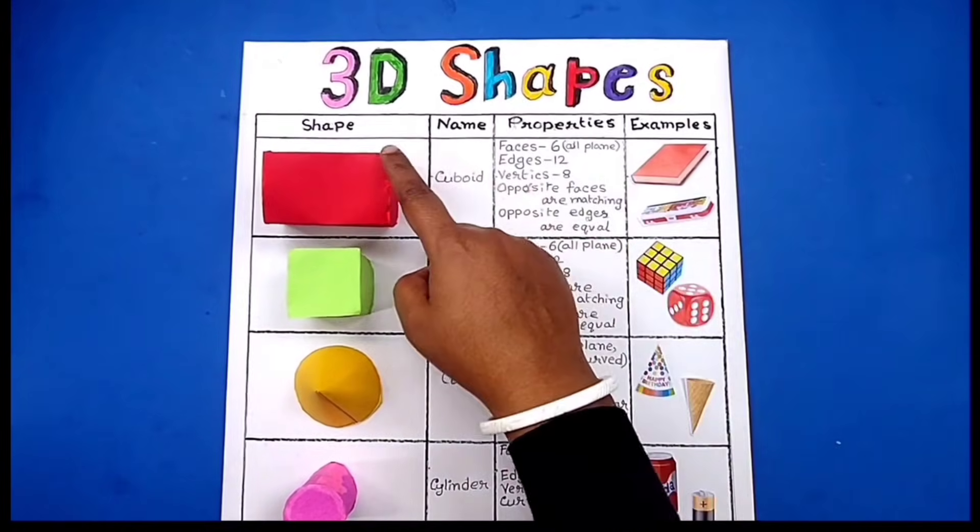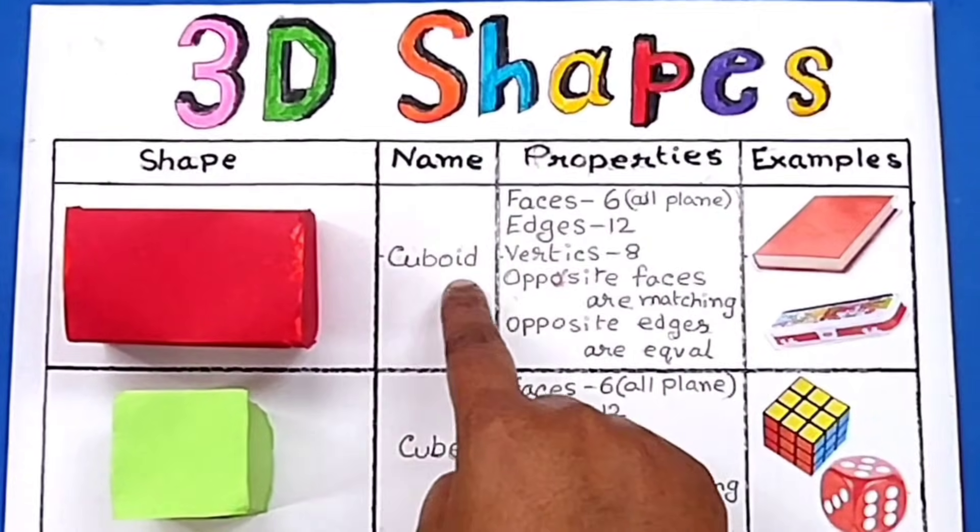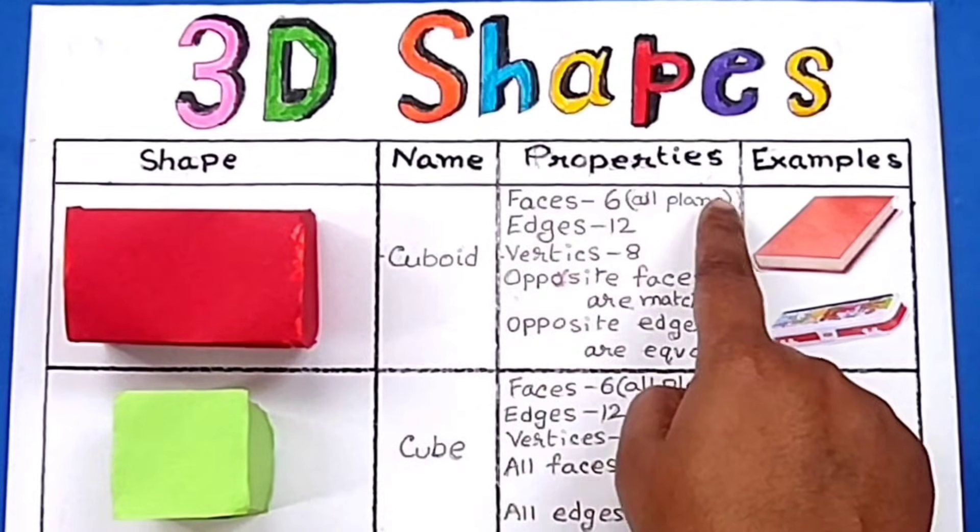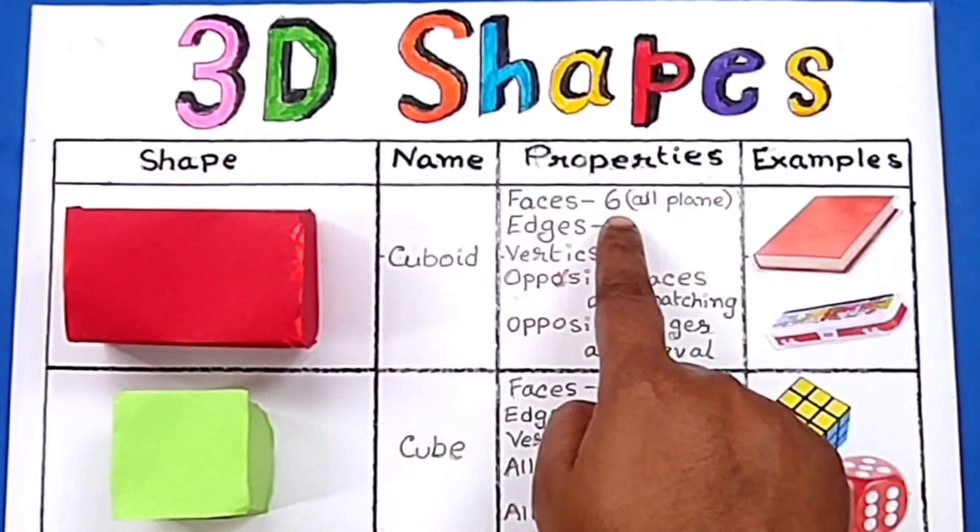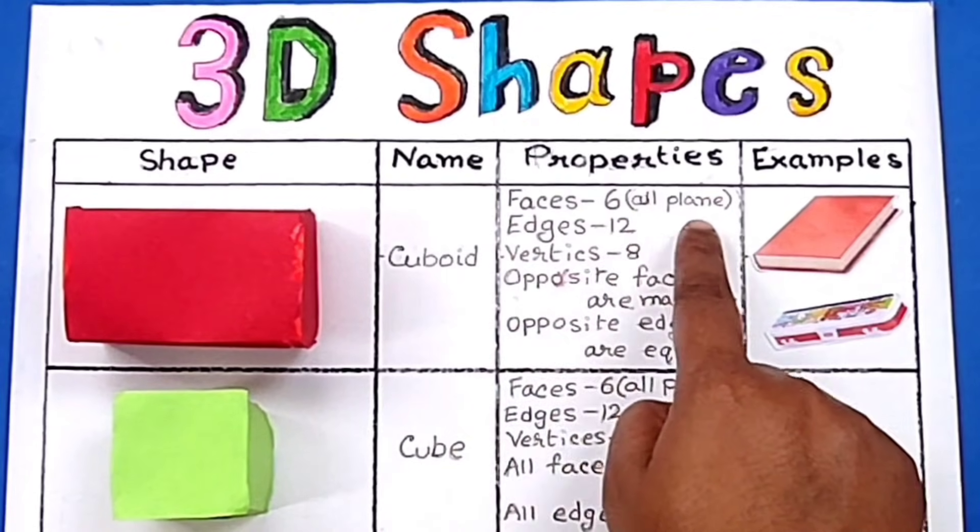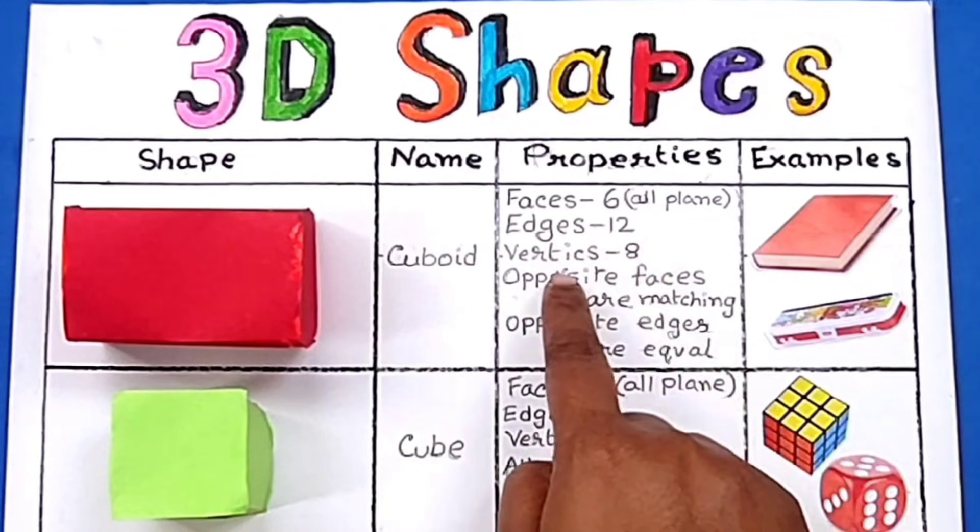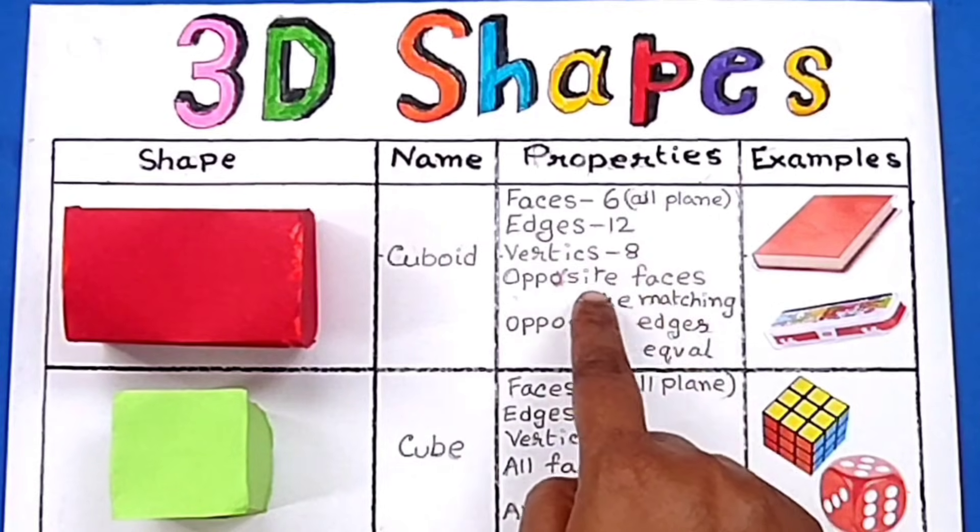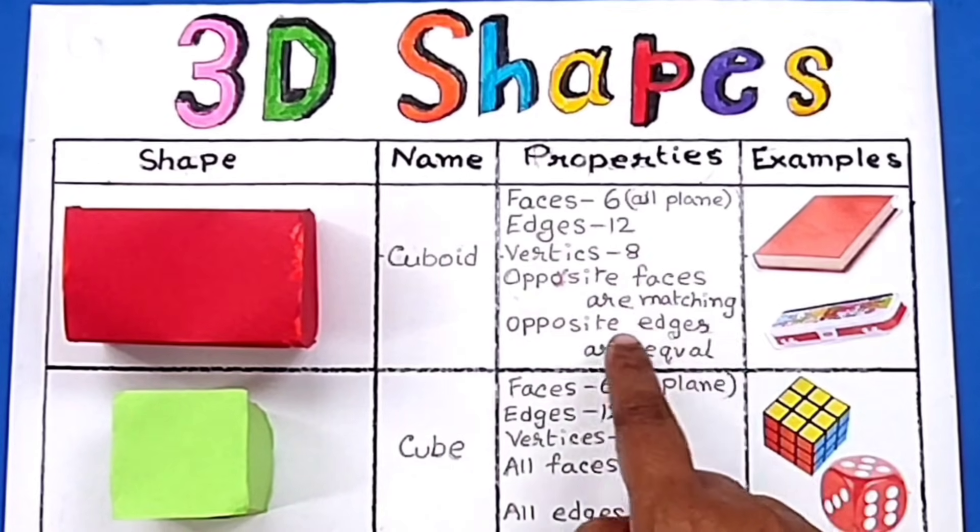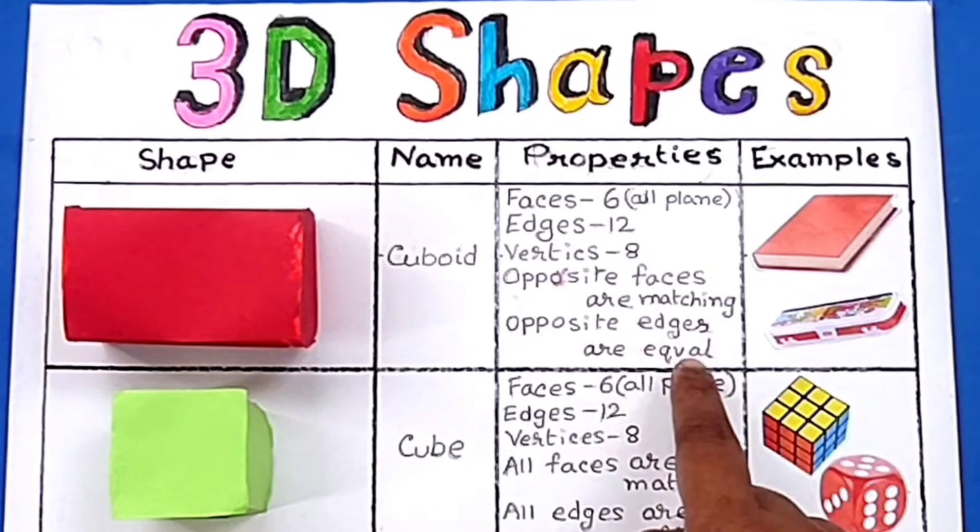3D shapes. The name of this shape is cuboid and the properties are: faces 6, all are plain; edges 12; vertices 8; opposite faces are matching; opposite edges are equal.